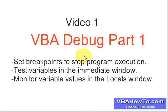Welcome back to part six of the VBA programming class on VBA debugging. We're going to look at the debugging part of VBA — in particular, how to set breakpoints to stop program execution, how to test variables in the immediate window, and how to monitor variables in the locals window. I'll show you the things I use most commonly.